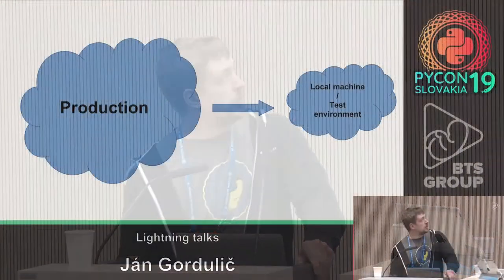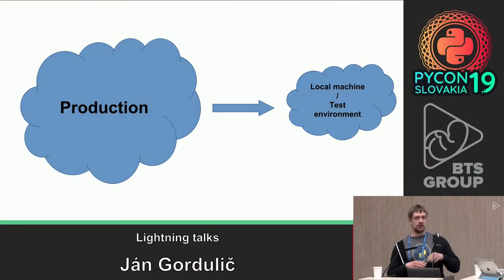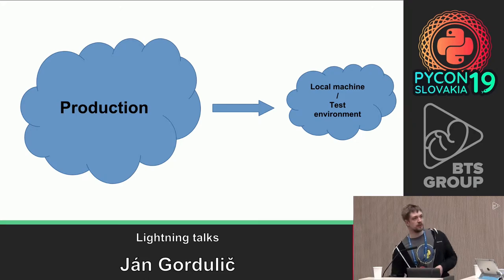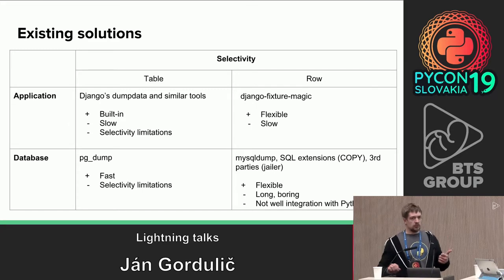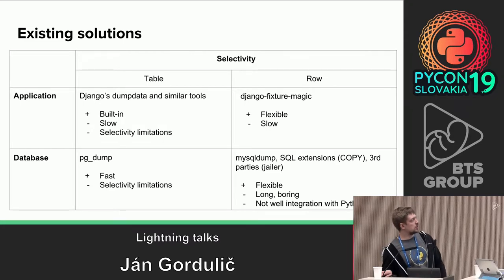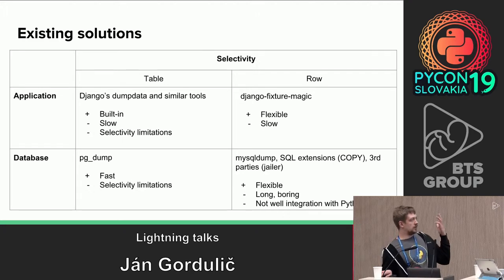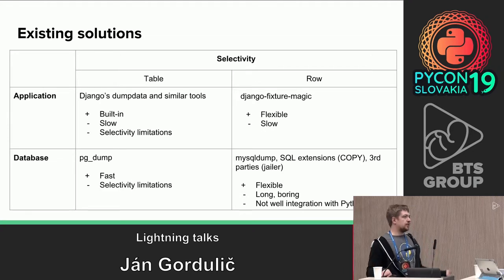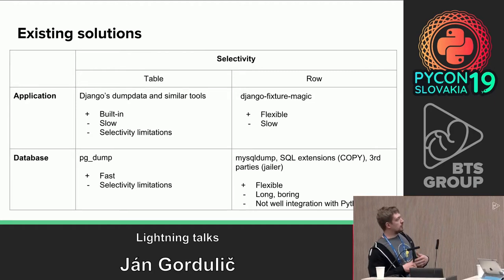Imagine the situation when you need to get some data for your tests or to play with on your local machine. You want to test your new feature with some production data instead of using some factories. So you have a couple of options. For example, you can dump the whole table with tools like Django dump data and similar, or you can use pg_dump and select some parts. Also, you can use role-based tools like Django Fixture Magic or some database-level stuff like MySQL dump and tools like Jailer. All of these solutions have their own cons and pros, but in general they are really slow and don't allow you to get the data fast.